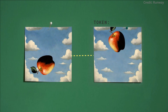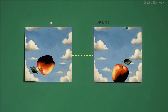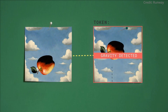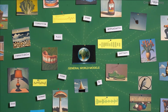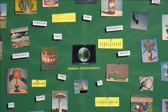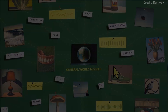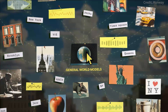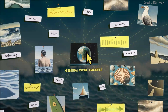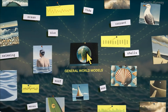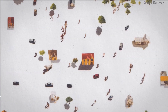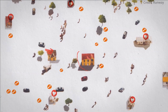Like something from a science fiction book, the world model is supposed to be able to construct an internal representation of any environment, enabling it to simulate future events within that setting. The ultimate objective of a general world model is to accurately map and simulate real-world scenarios and interactions — a feat that would mark a monumental achievement in AI.